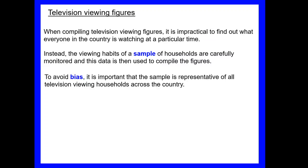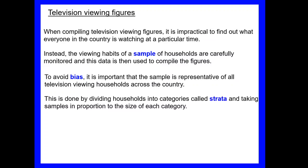We also want to avoid bias, so it's important the sample represents everyone. Bias is if we were to just select a particular group and leave out other groups. So we want to generally try and avoid bias when we're collecting our sample, and it's done for TV viewing figures by dividing the households into categories called strata and taking samples in proportion to the size of each category. So our strata for instance might be under fives, it might be teenagers, it might be middle-aged women, it might be older people. So we can have more than one strata; the singular of strata is a stratum.